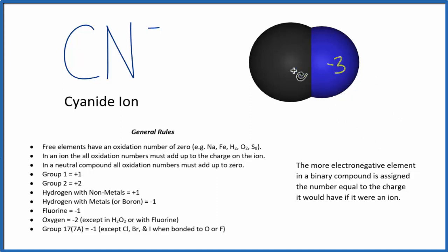And because of that, that means the carbon is going to be plus 2. And that's because minus 3 and plus 2, that gives us this negative 1 here. That's the charge on the entire cyanide ion.